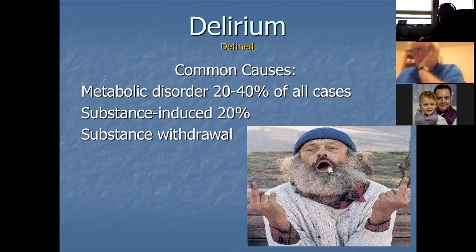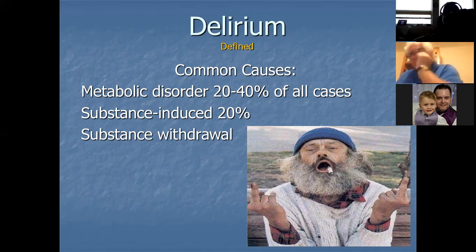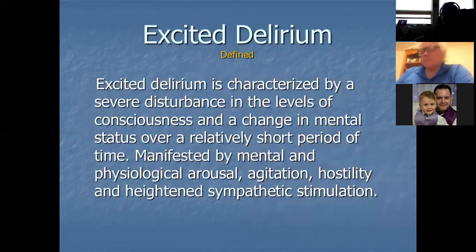Substance-induced or substance-withdrawal delirium — the most common thing we see would be alcohol withdrawal with the DTs, delirium tremors, or coming down from an opioid. Sometimes we trigger it: when we give people Narcan, if we give too much Narcan too quickly, we throw them into withdrawal because we're reversing the effects of the opioid. That's why you see videos of people getting Narcan and then getting up, punching, kicking, spitting and vomiting — because we've thrown them into withdrawal by giving too much Narcan too quickly.